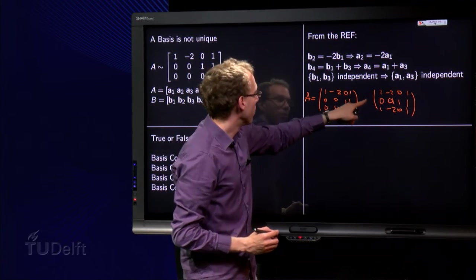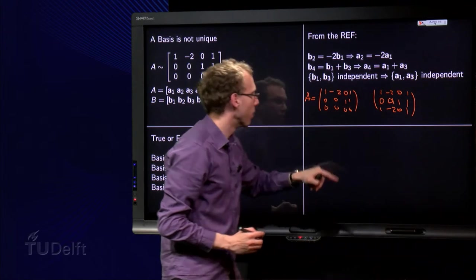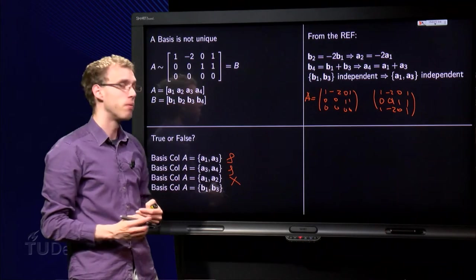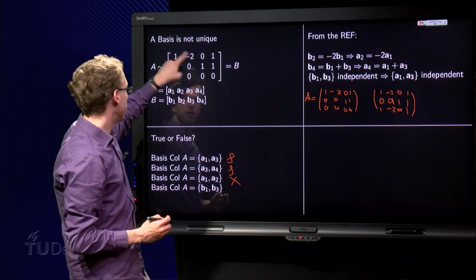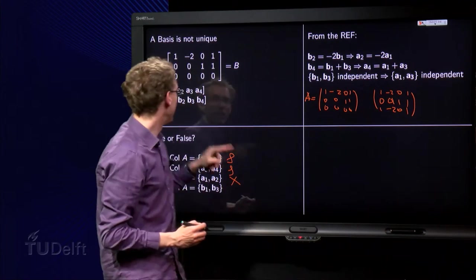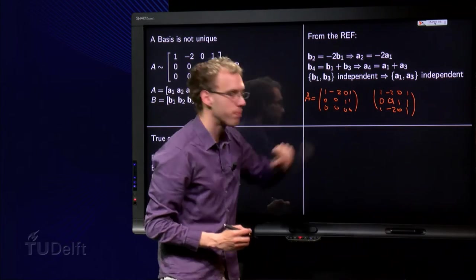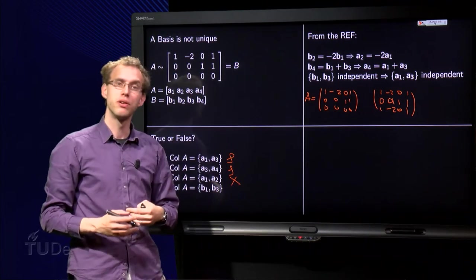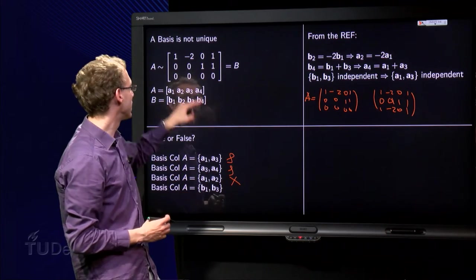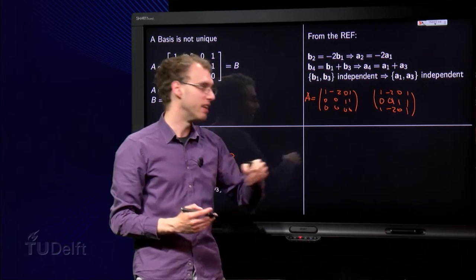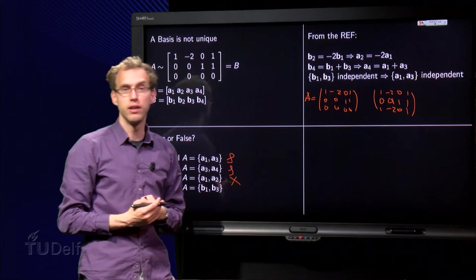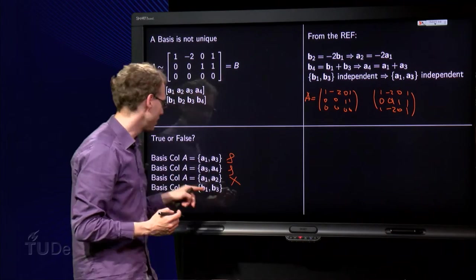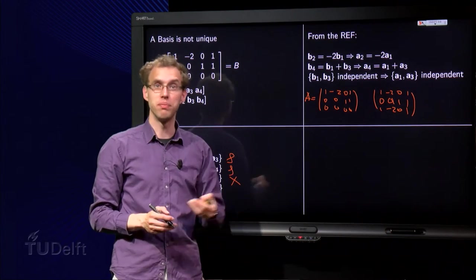And if you would use the vectors of B, you can never get a 1 here in the last position. So if A would have come from this matrix, then the columns of B can never span the columns of A. So in that case, B1 and B3 would not be a basis of col A. So here yes, there no.